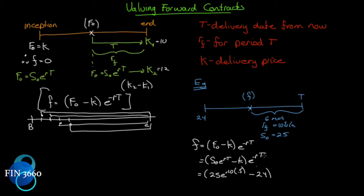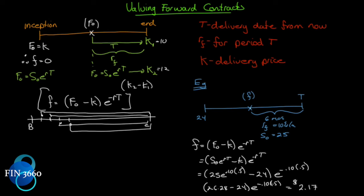The payoff at time T is the difference between the two futures prices. Expanding: 25·e^(0.10 × 0.5) = 26.28, minus 24 gives a payoff of 2.28 at T. Discounting backwards: multiply by e^(-0.10 × 0.5), and we get $2.17. So if at six months left to go we were holding a futures contract and wanted to exit, we would have a profit of $2.17 at that point.